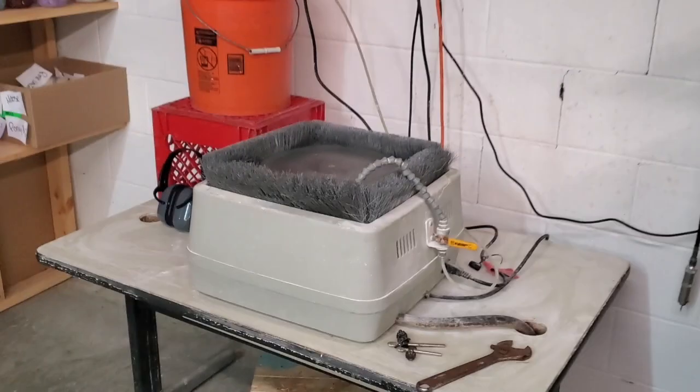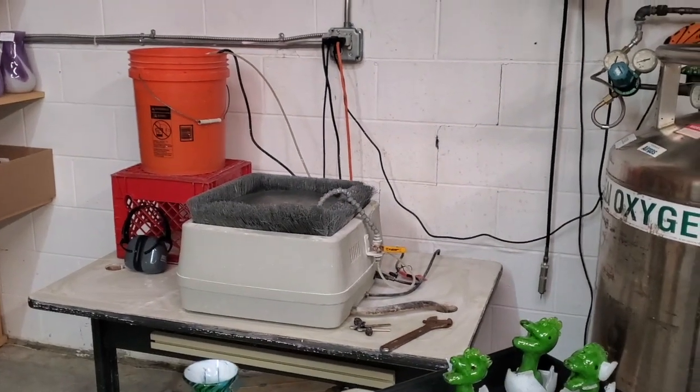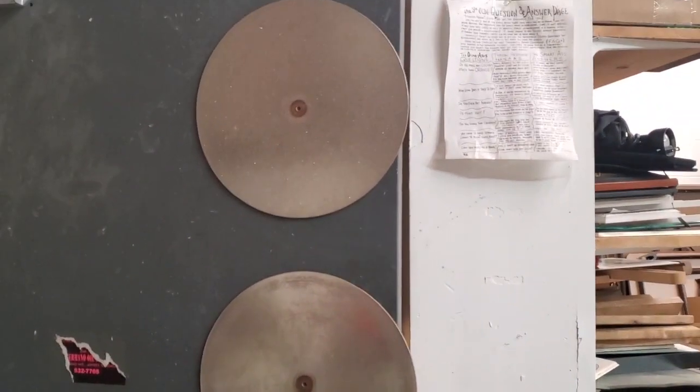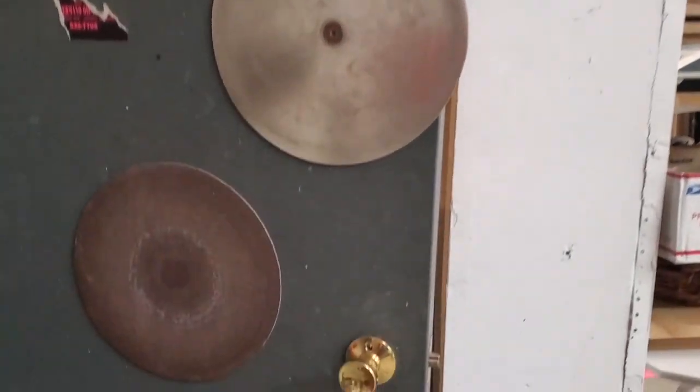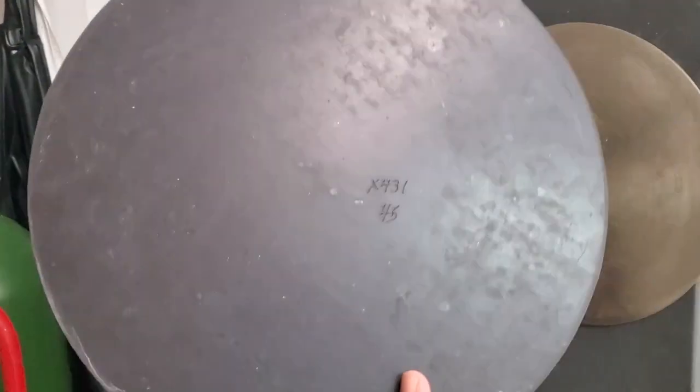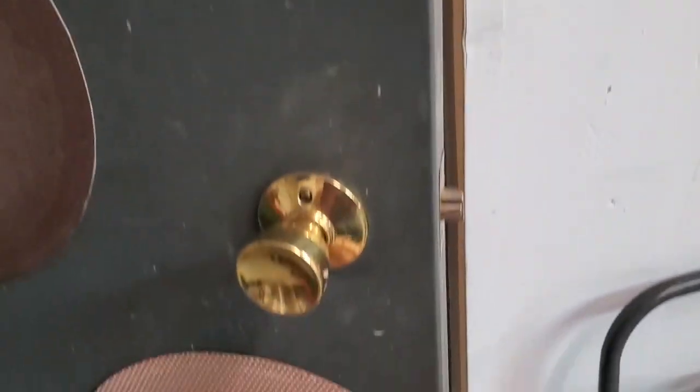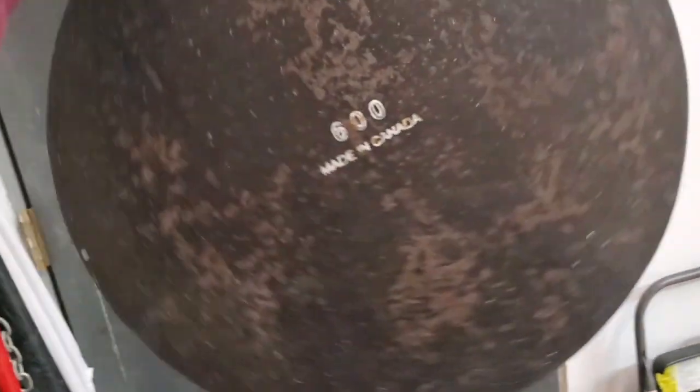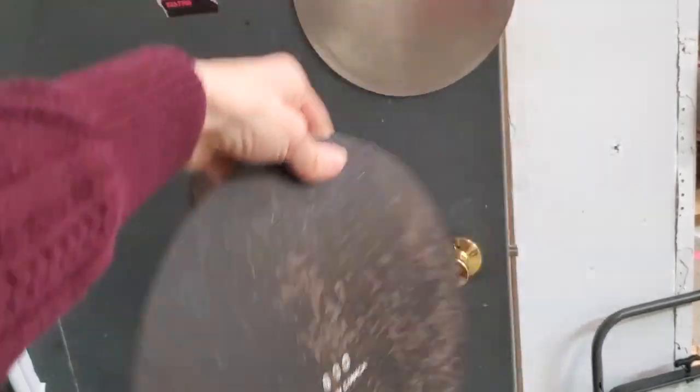Today we're going to teach you how to grind the grinding wheel. We've got all the grinding pads and they all have grit numbers on the back. See, this is grit 45. The lower the number, the stronger the grit.